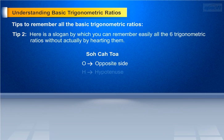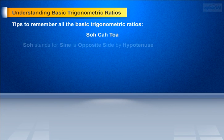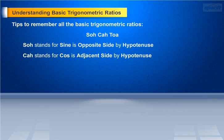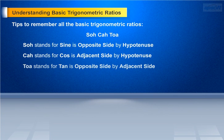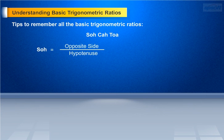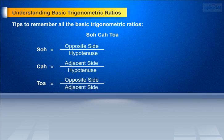Here, O represents the opposite side, H represents the hypotenuse, and A represents the adjacent side. SOH stands for sine is opposite side by hypotenuse. CAH stands for cosine is adjacent side by hypotenuse. TOA stands for tangent is opposite side by adjacent side. Remember that cosecant, secant and cot are reciprocals of sine, cosine and tangent respectively.